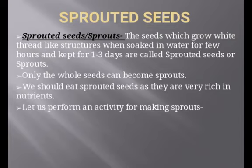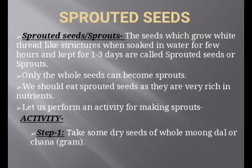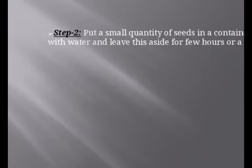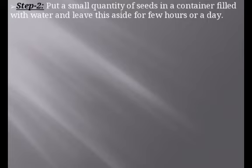Let us perform an activity for making sprouts. In step 1, take some dry seeds of whole moong dal or chana — any whole seed can be used to make sprouts. In step 2, put a small quantity of seeds in a container filled with water and leave it aside for a few hours or a day.